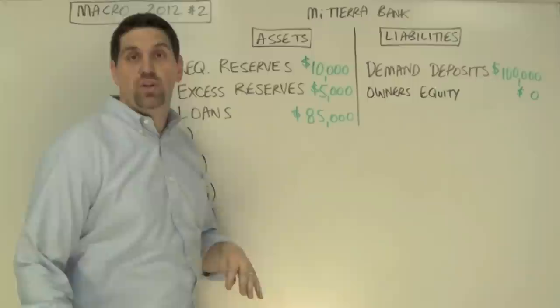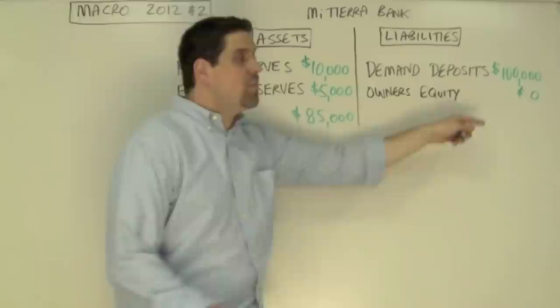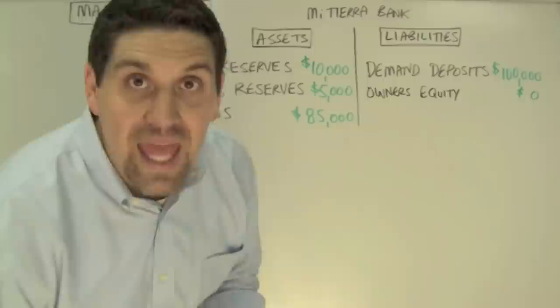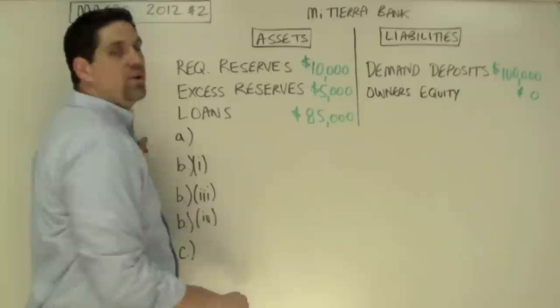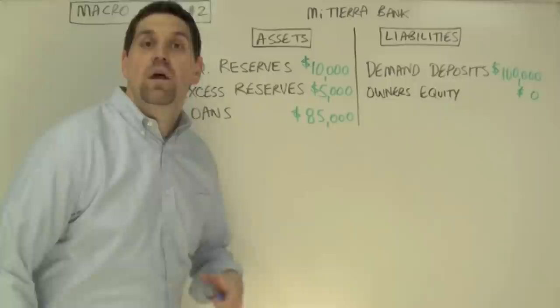This question is from 2012 question 2. It gave you a bank's balance sheet listing the assets and the liabilities. For liabilities, we have $100,000 of demand deposits like checking accounts that customers have put into the bank — it's a liability because the bank has to pay those people back. Now with that $100,000, the bank holds $10,000 in reserves, it has $5,000 excess reserves that it hasn't loaned out, and it also loaned out $85,000. The total assets equals the total liabilities, and that's why it's called a bank balance sheet.